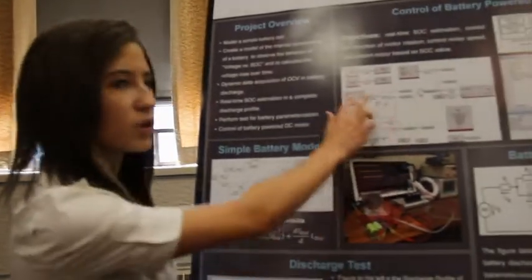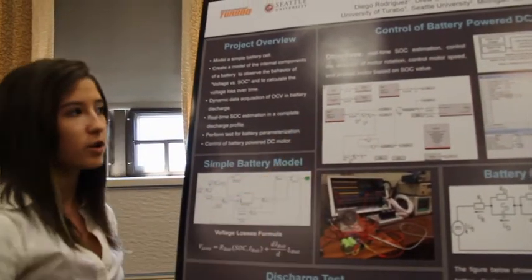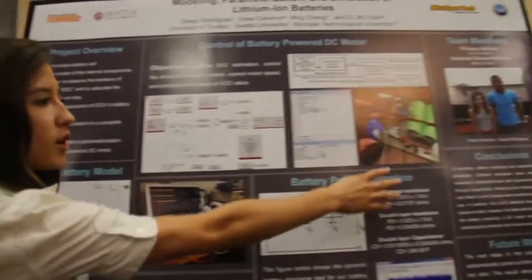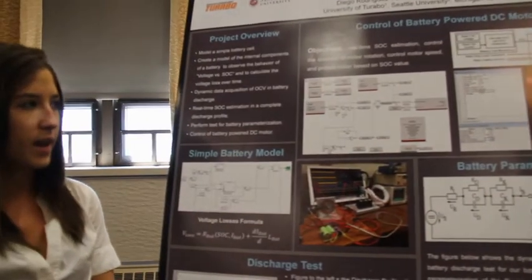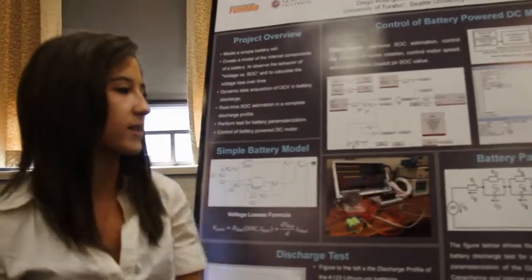We then can also control the rotational direction of the motor. Here's our setup here and we also changed out the current sensor for a more accurate one. And this is the interface we used to acquire this data.